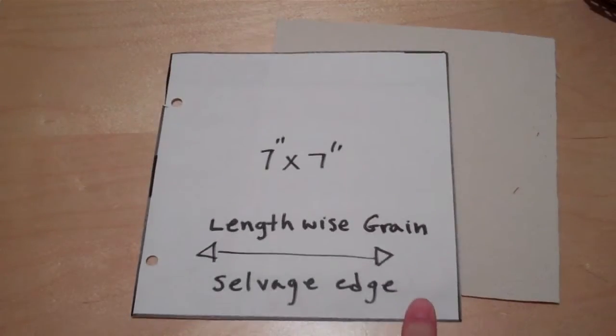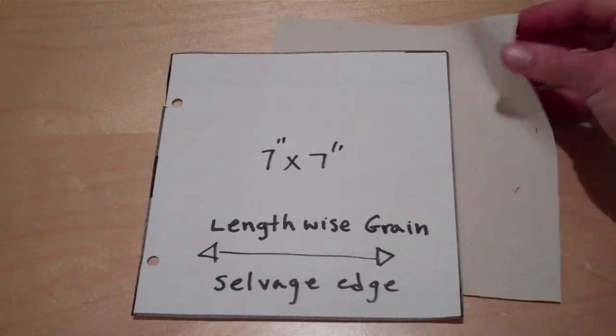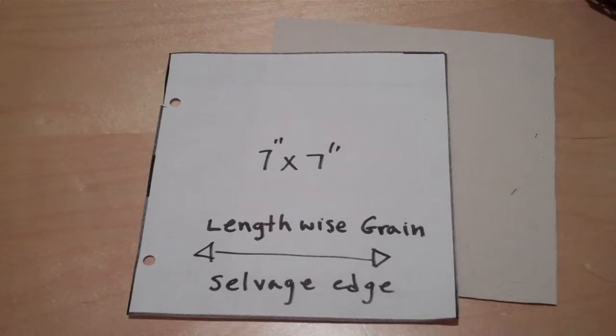Take your seven by seven inch sewing skill pattern and cut three squares out of the muslin fabric. Please be sure to iron the fabric before you cut it.